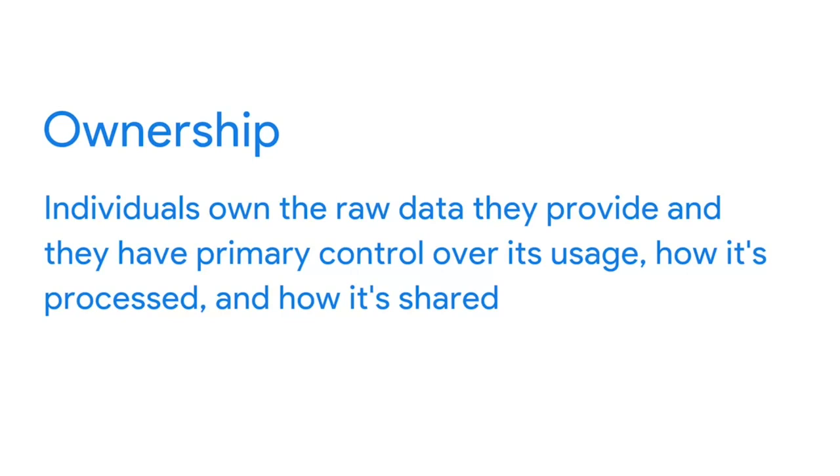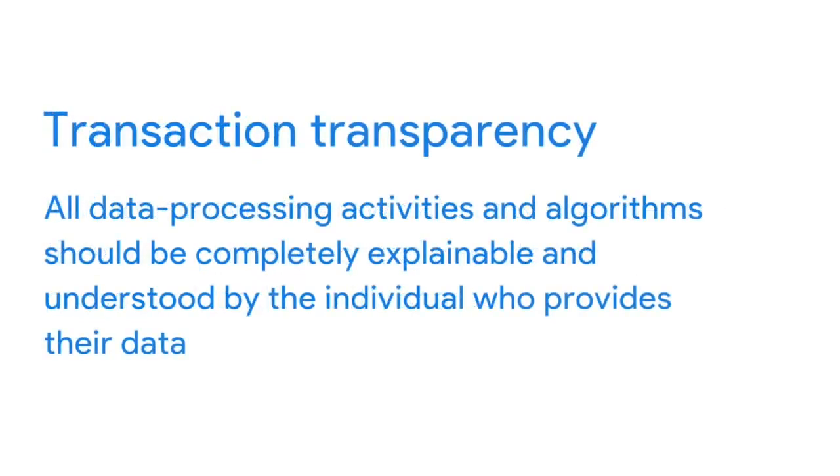There are lots of different aspects of data ethics, but we'll cover six: ownership, transaction transparency, consent, currency, privacy, and openness. First up is ownership. This answers the question: who owns data? It isn't the organization that invested time and money collecting, storing, processing, and analyzing it. It's individuals who own the raw data they provide. And they have primary control over its usage, how it's processed, and how it's shared. Next we have transaction transparency, which is the idea that all data processing activities and algorithms should be completely explainable and understood by the individual who provides their data. This is in response to concerns over data bias — bias outcomes can lead to negative consequences, so it's helpful to provide transparent analysis, especially to the people who share their data.